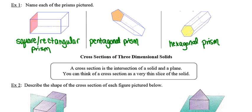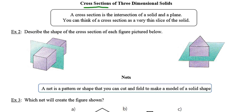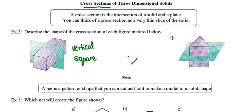Sometimes it's helpful to take a very thin slice of one of these three-dimensional solids and look at it, and that very thin slice is called a cross-section. The formal definition says a cross-section is any intersection of a solid with a plane, but I find it helpful to think about it as a very thin slice. The slice here is a vertical cross-section because the plane intersecting the solid is a vertical plane, and that slice is going to be a square. In the second case, the plane is horizontal — a horizontal cross-section — and it's going to be in the shape of a triangle.